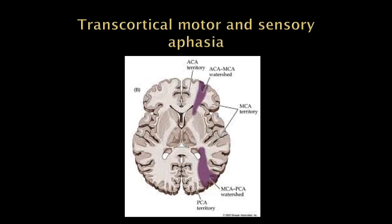You might ask: how can someone repeat sentences if they don't understand what you're saying? What these patients do is they often don't understand what you're saying, but when you're just talking with them, they will echo back words that they hear. This is called echolalia — they echo back things you're saying — and that suggests the connecting pathway between Wernicke's and Broca's area is working fairly well.